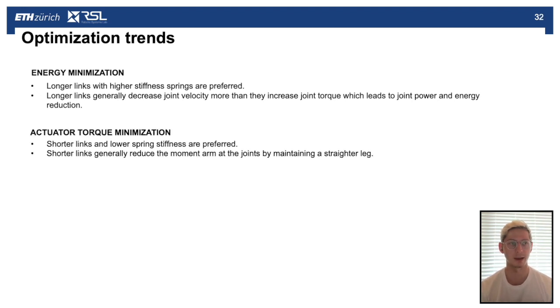Next, looking at the actuator torque minimization, here we preferred short links and lower spring stiffness. We found that shorter links generally reduce the moment arm at the joints by maintaining a straighter leg during the motion.